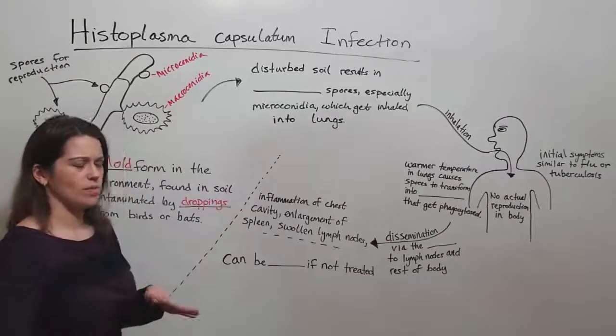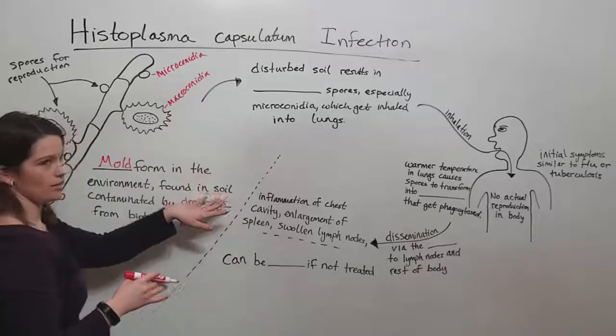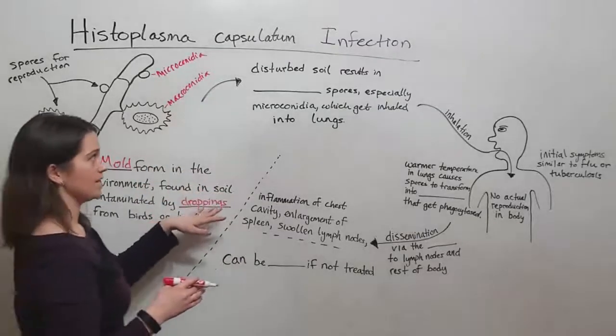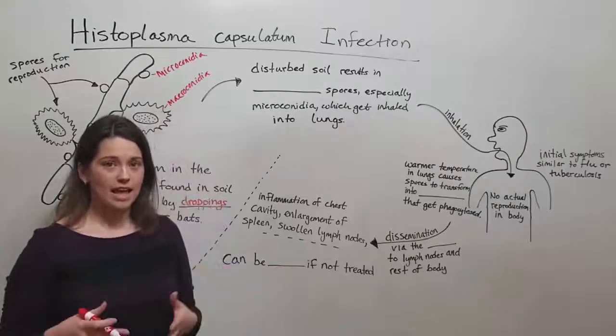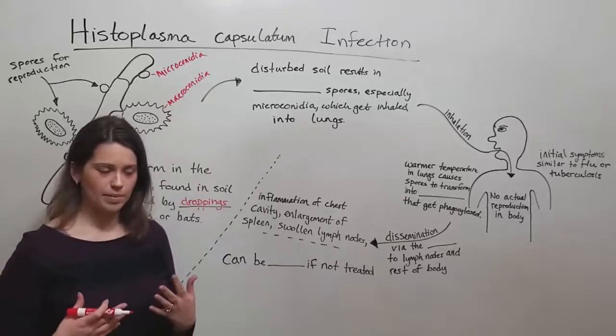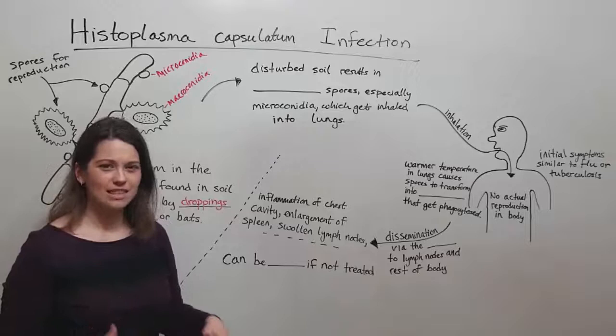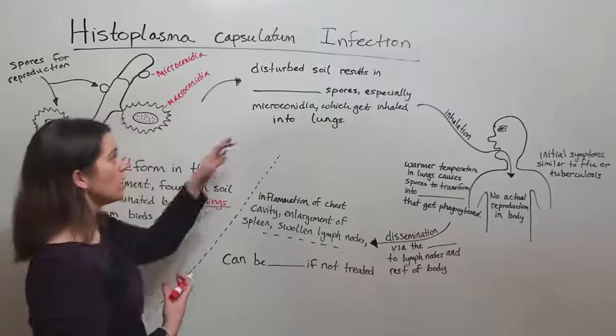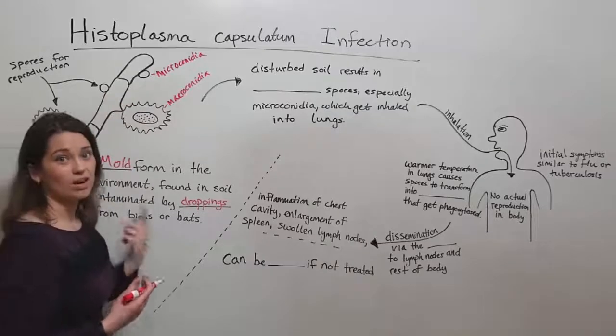And so how does it get into humans? Well, when humans encounter soil that's been contaminated by these droppings, if they disturb the soil, for example, perhaps they are in a cave with a lot of bats and they're disturbing the guano that built up, those bat droppings, or if they're doing farming type activities, anything that might disturb the soil, that will result in these different kinds of spores becoming aerosolized.